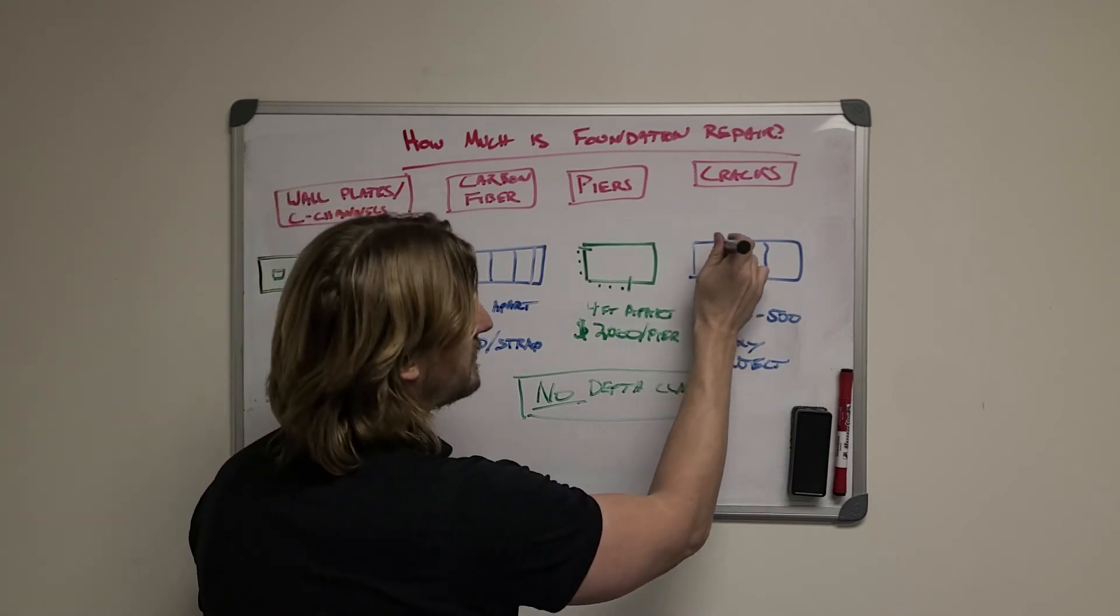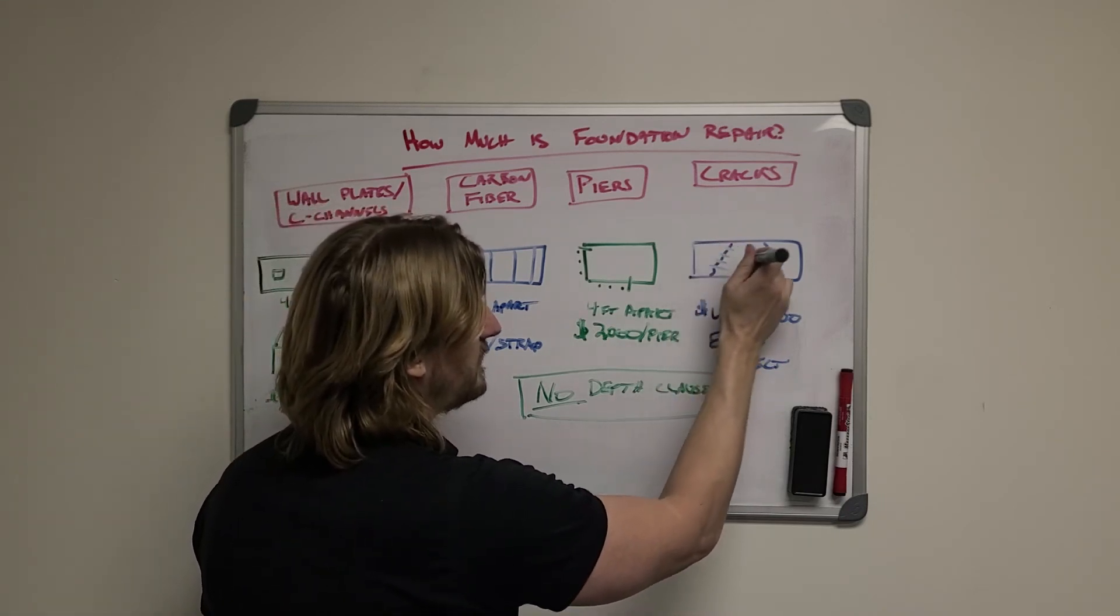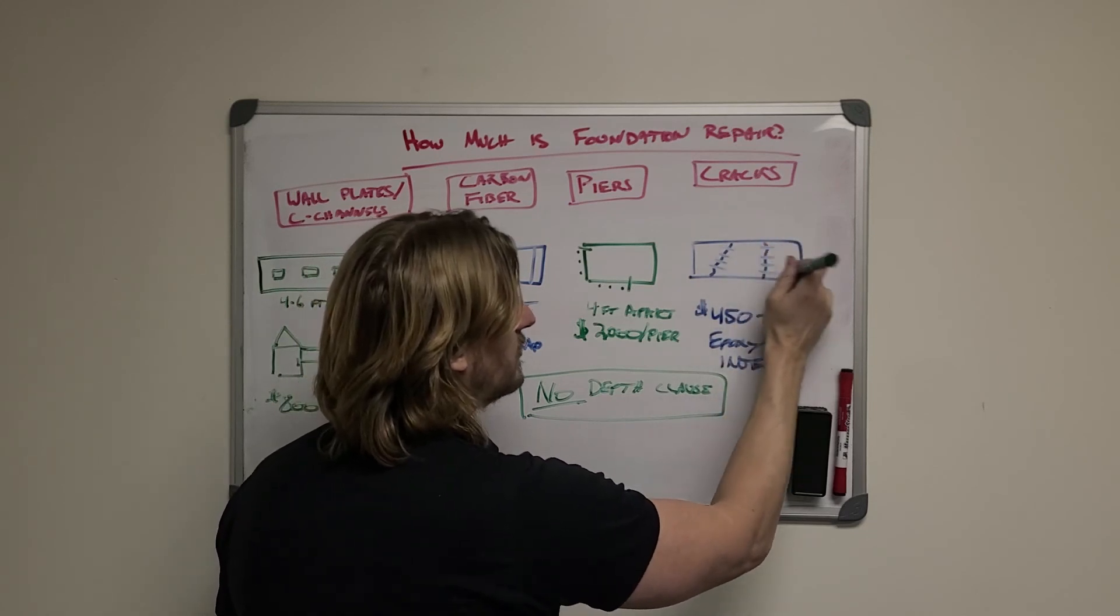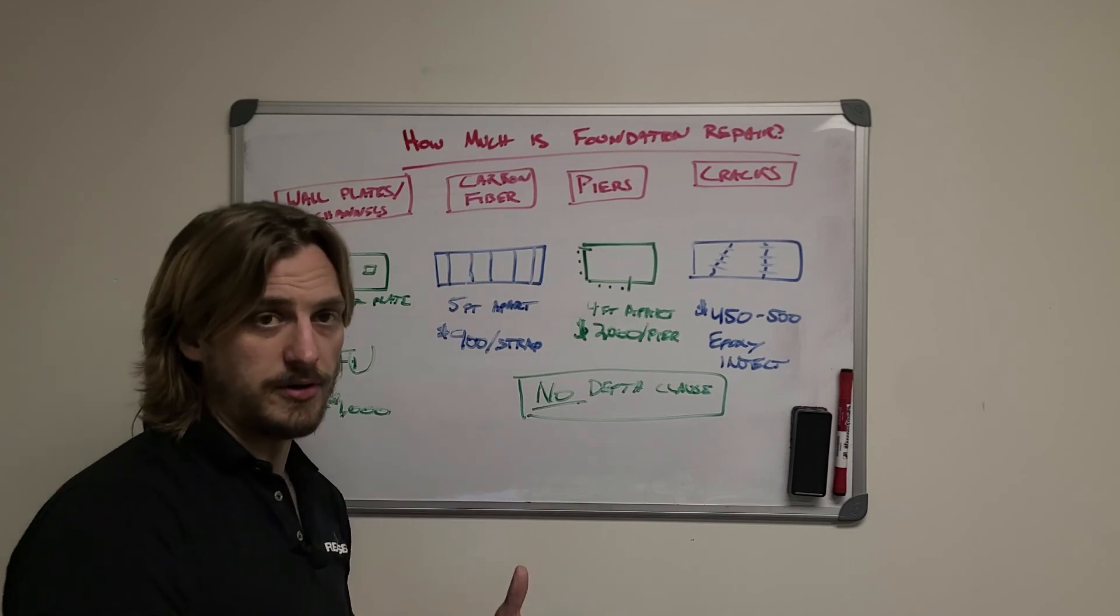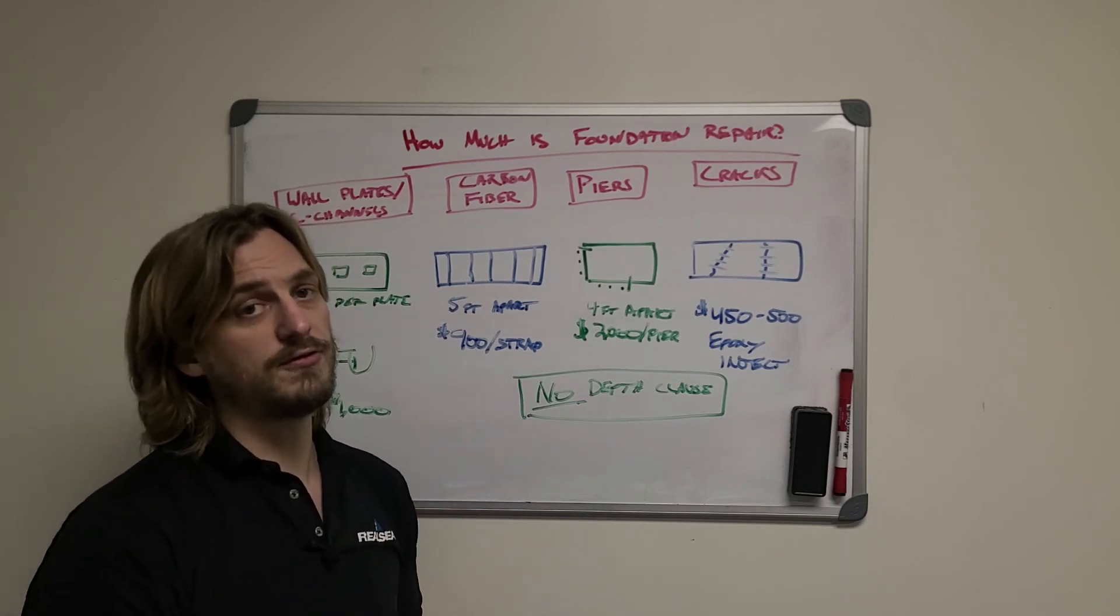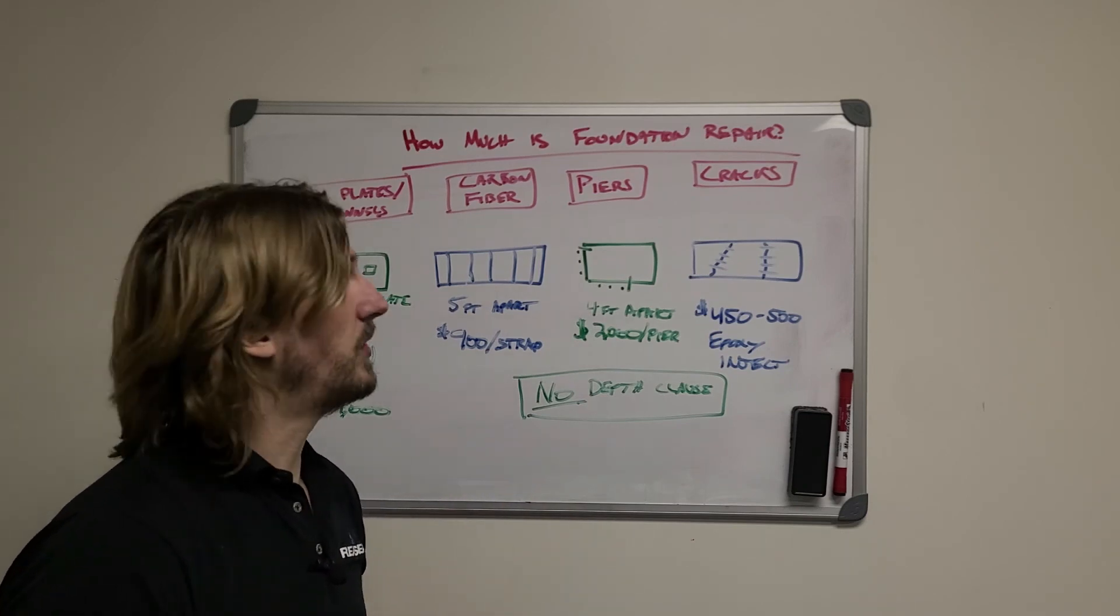Now if you need to do carbon fiber staples on there, what we call grid stitch repair, and we embed those into the concrete, you can expect that price to just about double and that'll give it structural reinforcement and a better warranty as well.